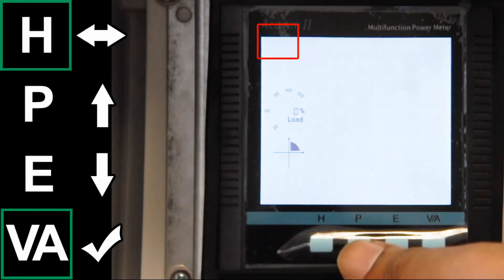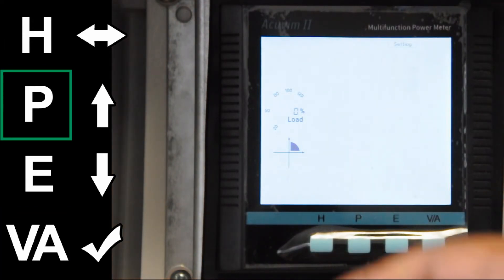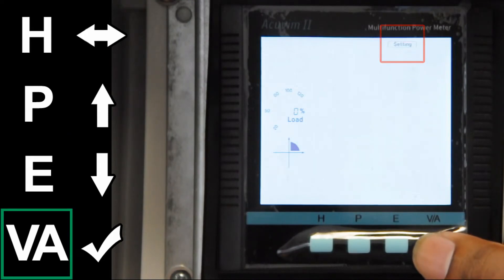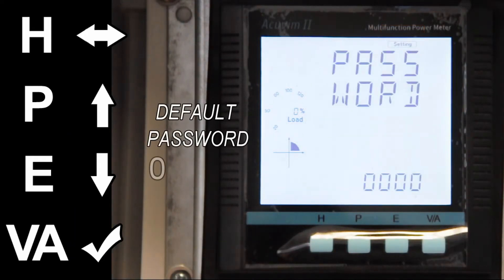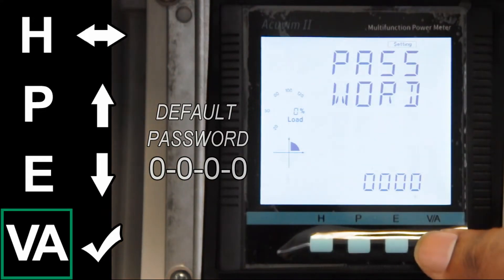To move to the setting, you have to press P until it gets to setting. Press VA to enter into the setting. The default password is 0000. Press ENTER once the password has been entered.